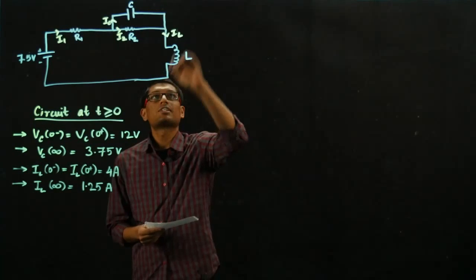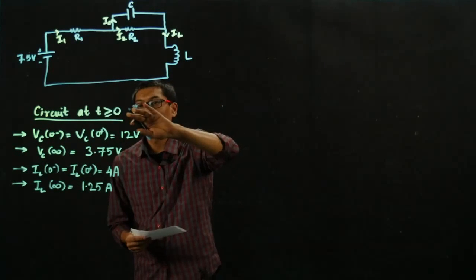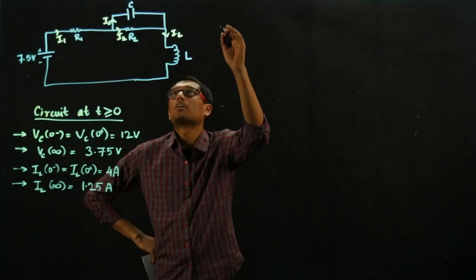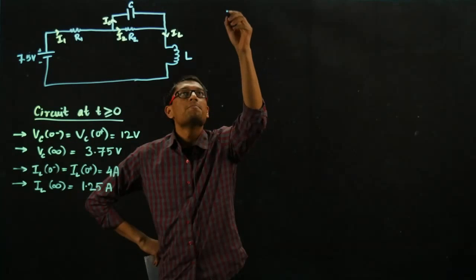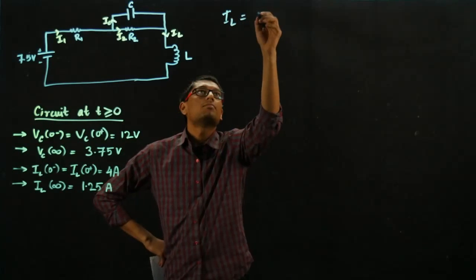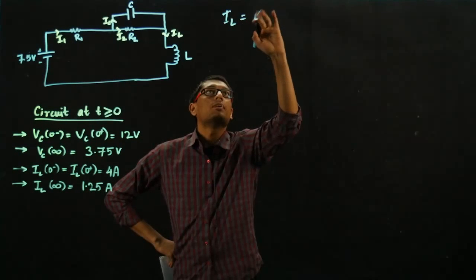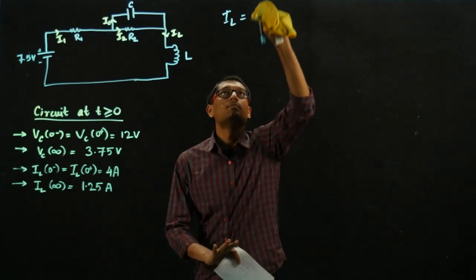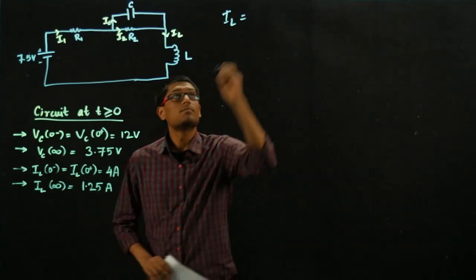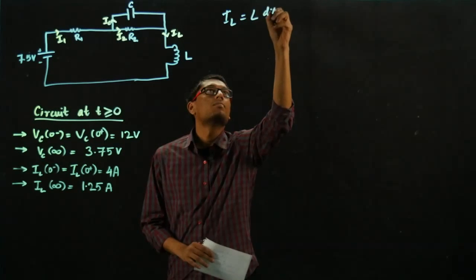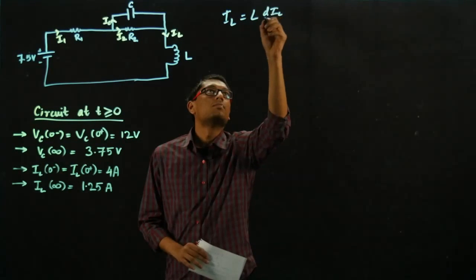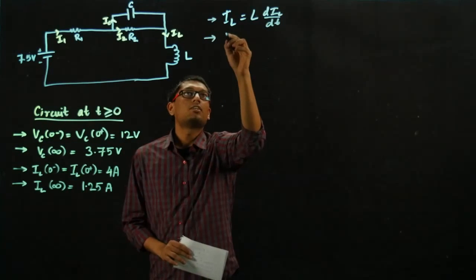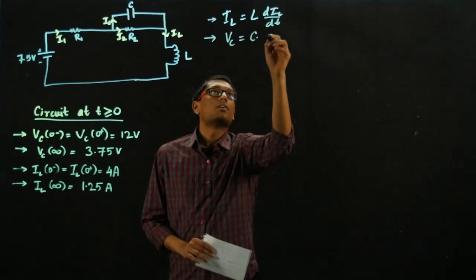So the circuit looks like this for times greater than or equal to 0. Now we know that for the inductor the current value is governed by this equation.